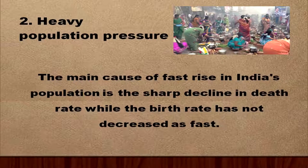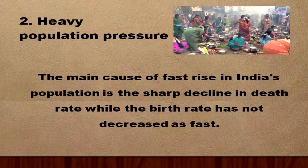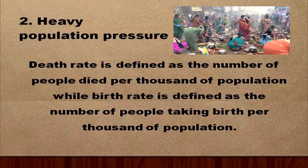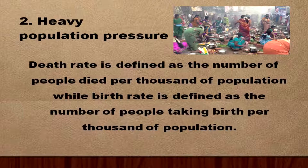The main cause of the fast rise in India's population is the sharp decline in death rate, while the birth rate has not decreased as fast. As a result, the gap between the death rate and the birth rate has gone on widening. The death rate is defined as the number of people who died per thousand of population, while the birth rate is defined as the number of people taking birth per thousand of population. We have a decreasing death rate and an ever-decreasing birth rate, but at a lower rate.